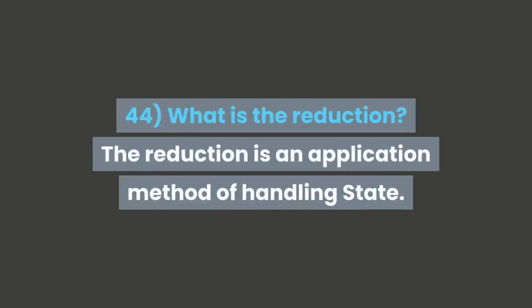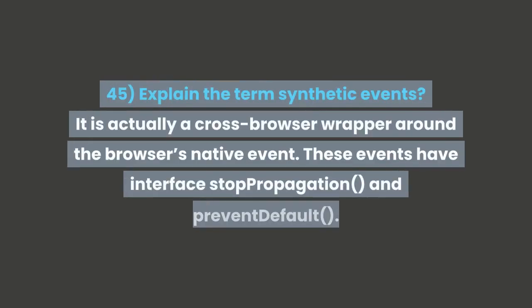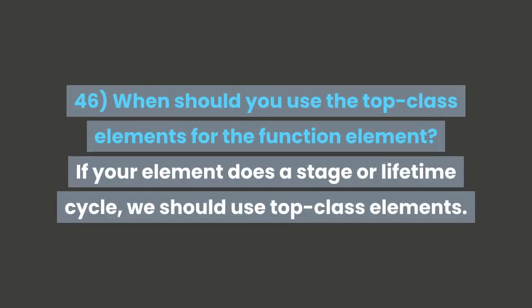Question 44: What is the reducer? The reducer is an application method of handling state. Question 45: Explain the term synthetic events. It is a cross-browser wrapper around the browser's native event. These events have interface stopPropagation and preventDefault. Question 46: When should you use class components over function components? If your component uses state or lifecycle methods, you should use class components.